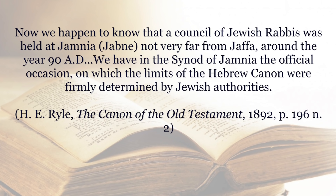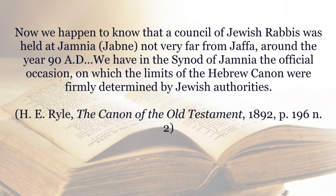This theory by Heinrich Graetz was picked up in English-speaking scholarship, especially by a Protestant scholar named H.E. Ryle. He really spread the theory of Jamnia into the English-speaking world. Ryle wrote in his very popular book on the canon of the Old Testament: 'Now we happen to know that a council of Jewish rabbis was held at Jamnia, not very far from Jaffa, around the year 90 AD. We have in the synod of Jamnia the official occasion on which the limits of the Hebrew canon were firmly determined by Jewish authorities.' Ryle is very strong in arguing that the Old Testament canon was officially closed by a council of Jewish rabbis held at Jamnia in 90 AD — and that that is, in a sense, the origin of the Old Testament.